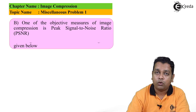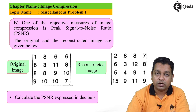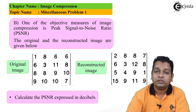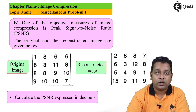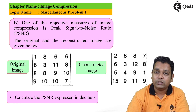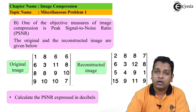Part B starts with: one of the objective measures of image compression is peak signal-to-noise ratio, abbreviated as PSNR. The original image is a 4 by 4 matrix with rows: [1 8 6 6], [6 3 11 8], [8 8 9 10], and [9 10 10 7]. The reconstructed image is also 4 by 4 with rows: [2 8 8 7], [6 3 12 8], [5 4 9 1], and [15 9 11 9].